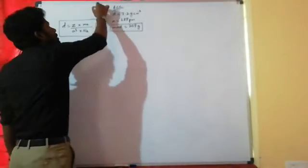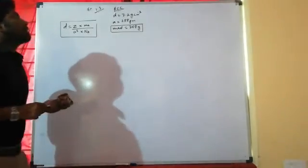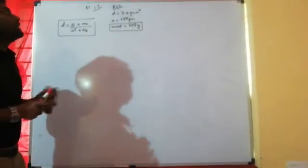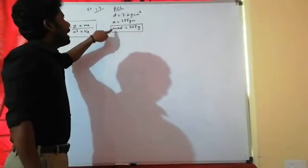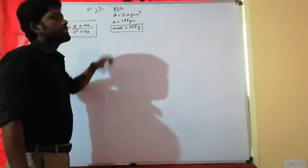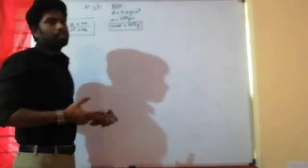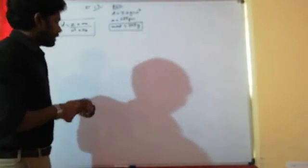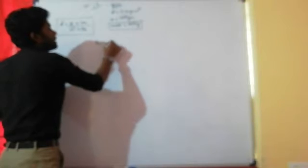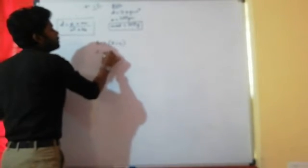This is Example 1.3, a 3-mark question. The given information is: BCC unit cell, density of the unit cell, edge length a, and a mass of 208 grams. We have to find how many atoms are present in 208 grams of the element.